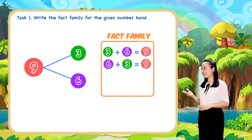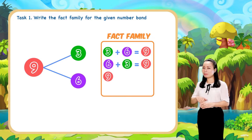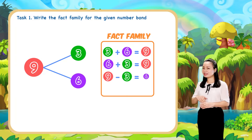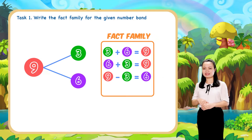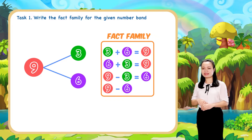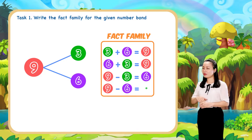For this number bond, the fact family includes: 9 minus 3 equals 6, and 9 minus 6 equals 3.